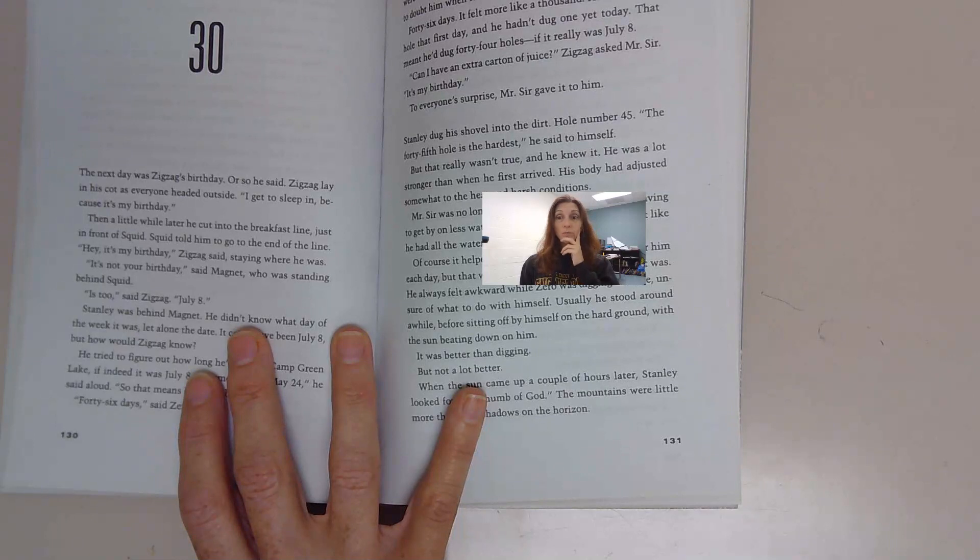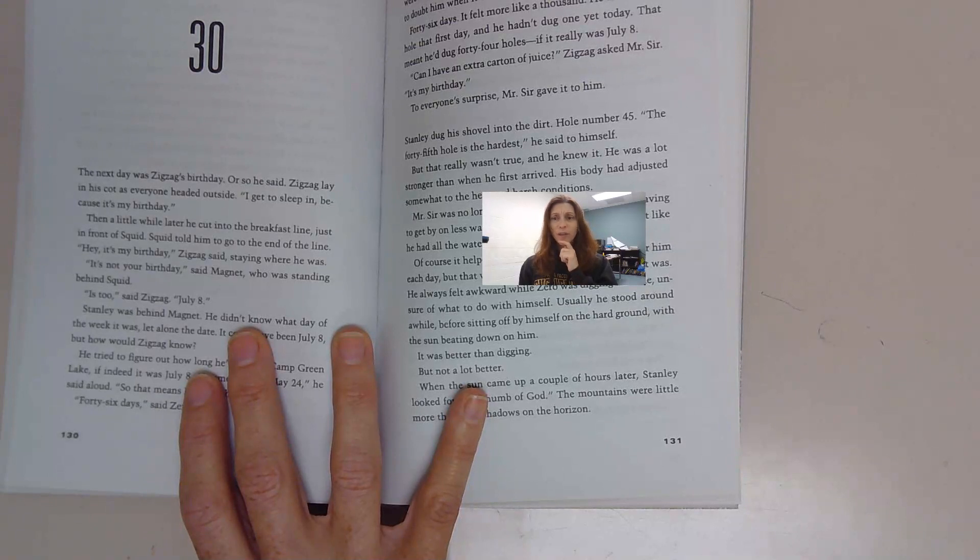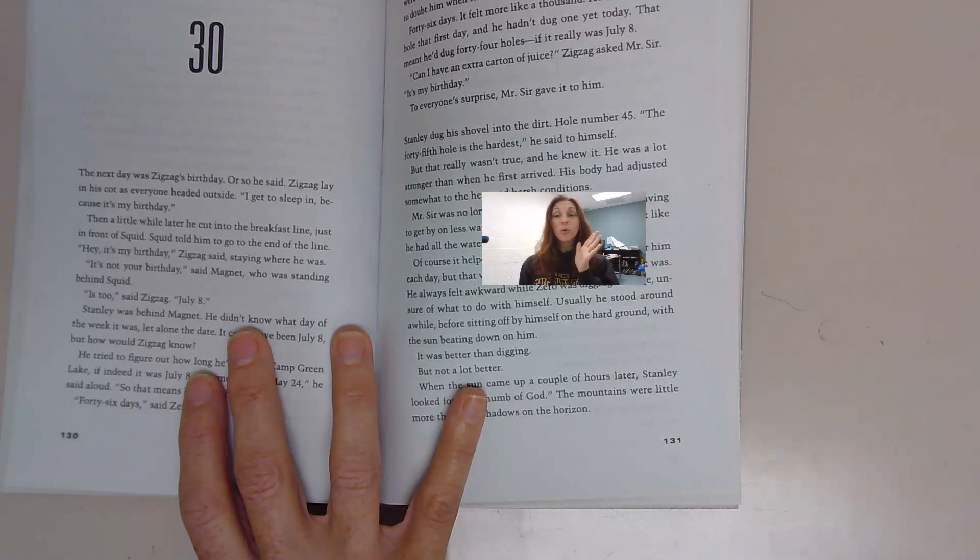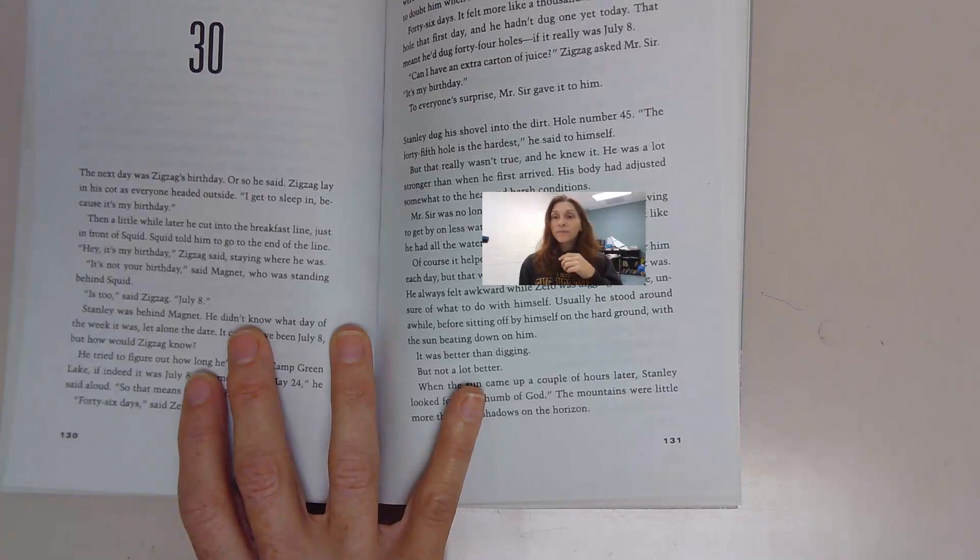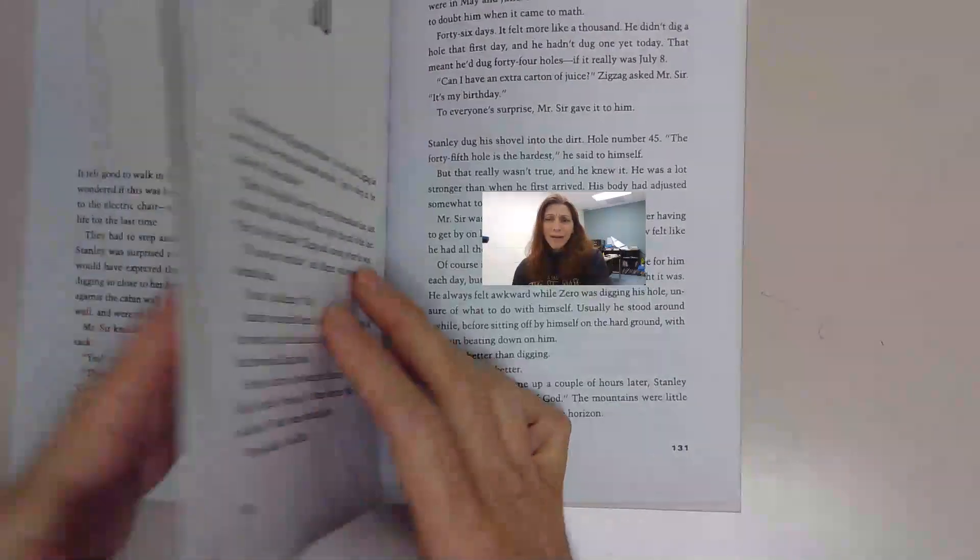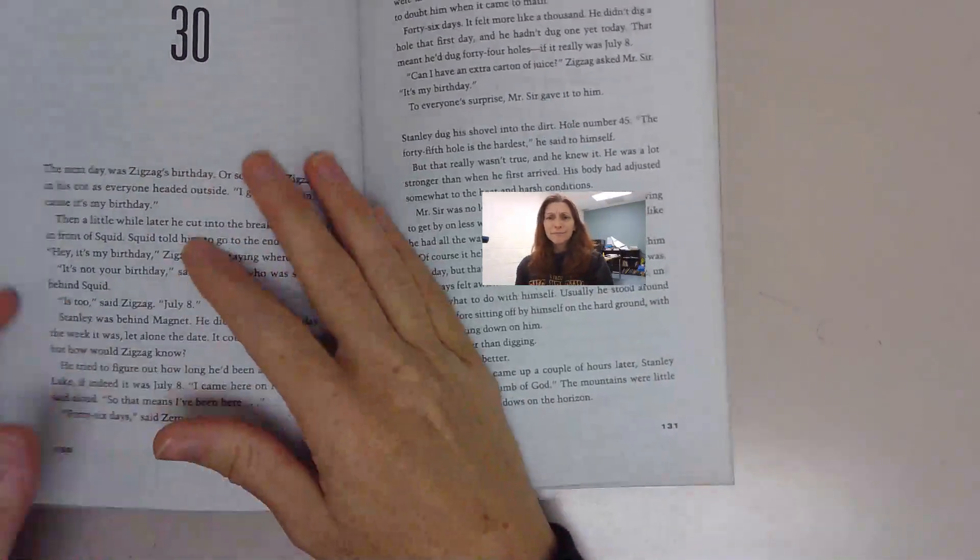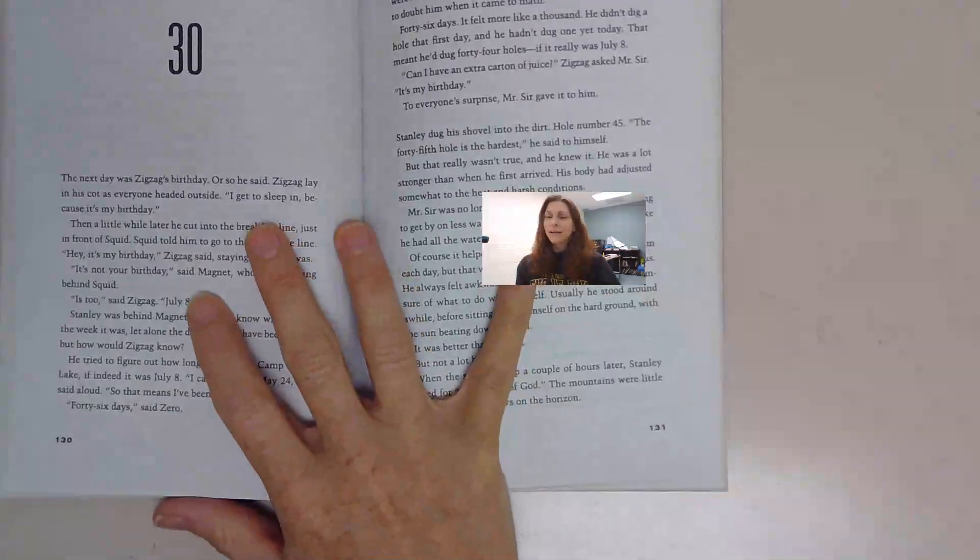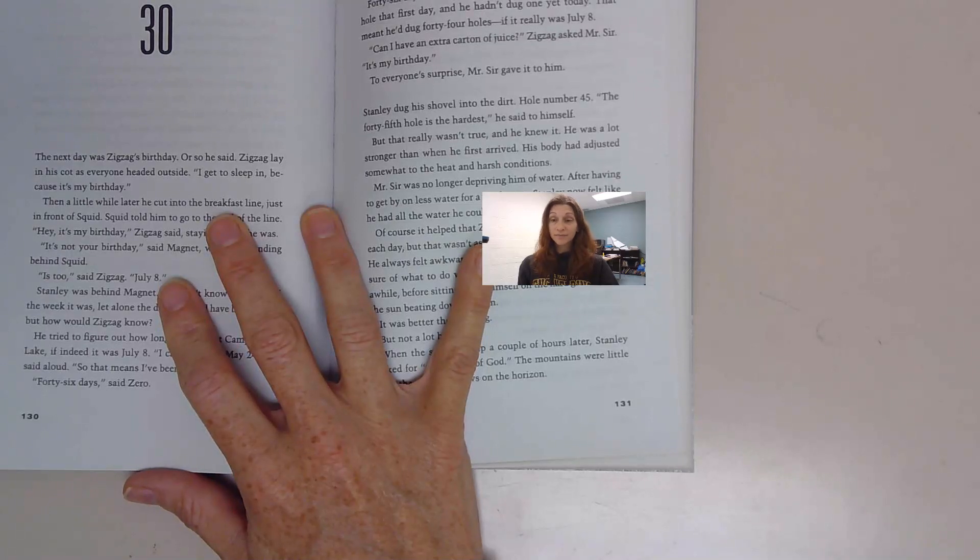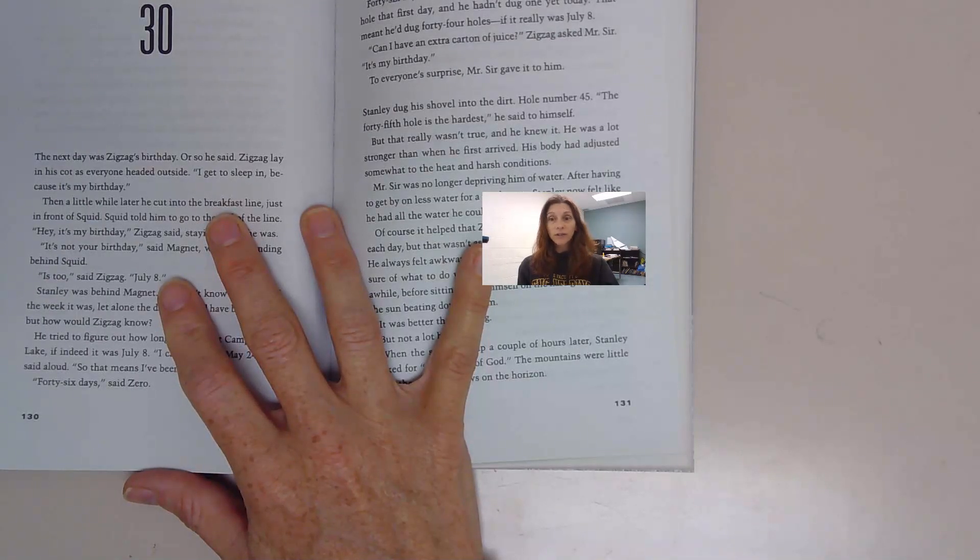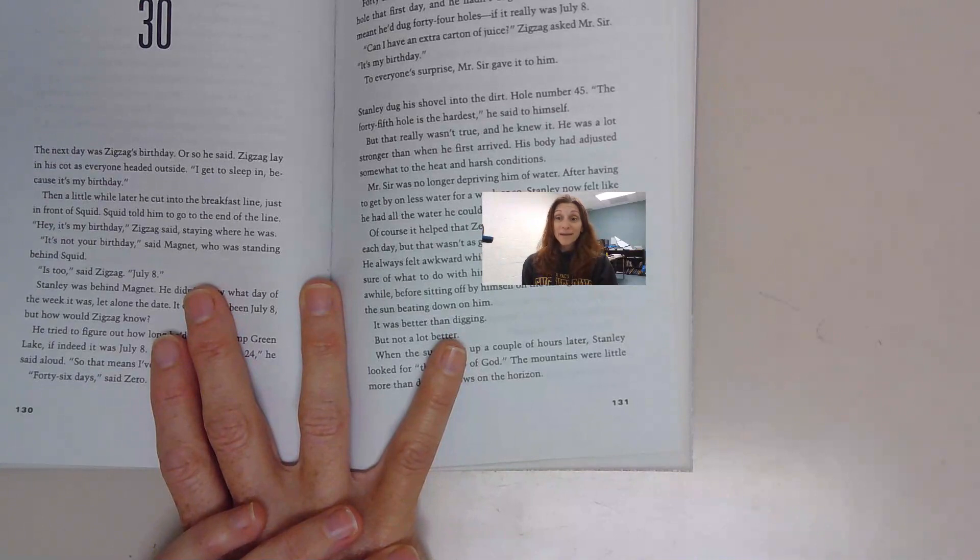We also have learned a little bit about Zero. Zero's name isn't really Zero. It's Hector Zeroni. And a long, long time ago, it was Madame Zeroni who gave advice on how to marry Myra. She had two sons that had gone over to America and were living there.